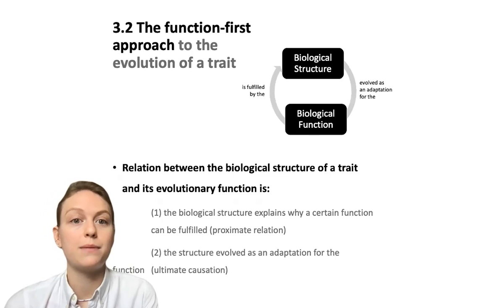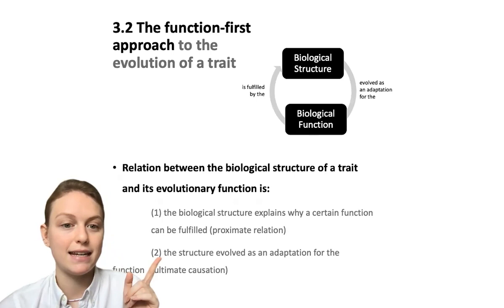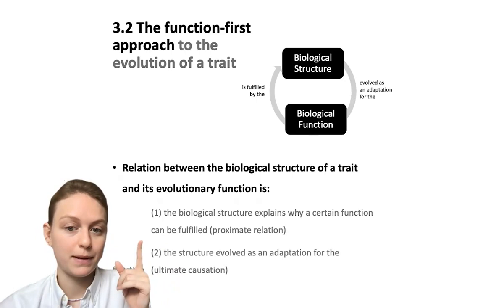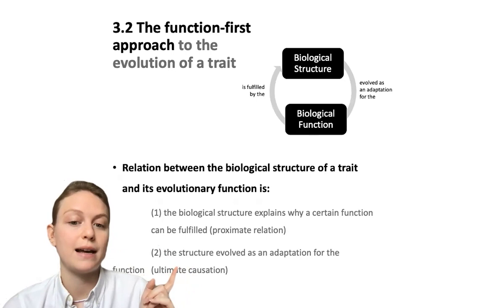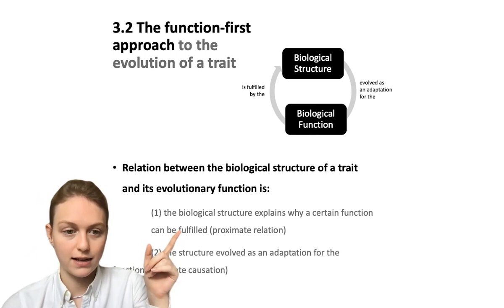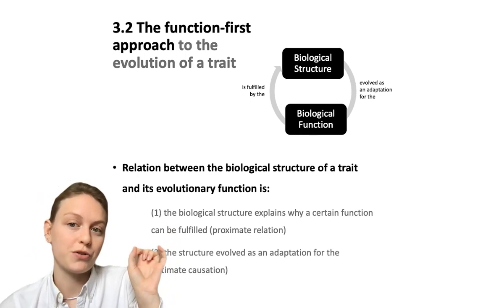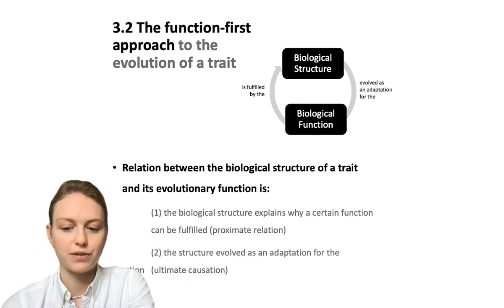Now we come to the function-first approach to the evolution of a trait. The relation between biological structure and evolutionary function is: one, the biological structure explains why a certain function can be fulfilled — this is proximate causation — and two, the structure evolved as an adaptation for the function — this is ultimate causation. Basically, the biological structure evolved as an adaptation for the biological function, and then the biological function is fulfilled by the biological structure.